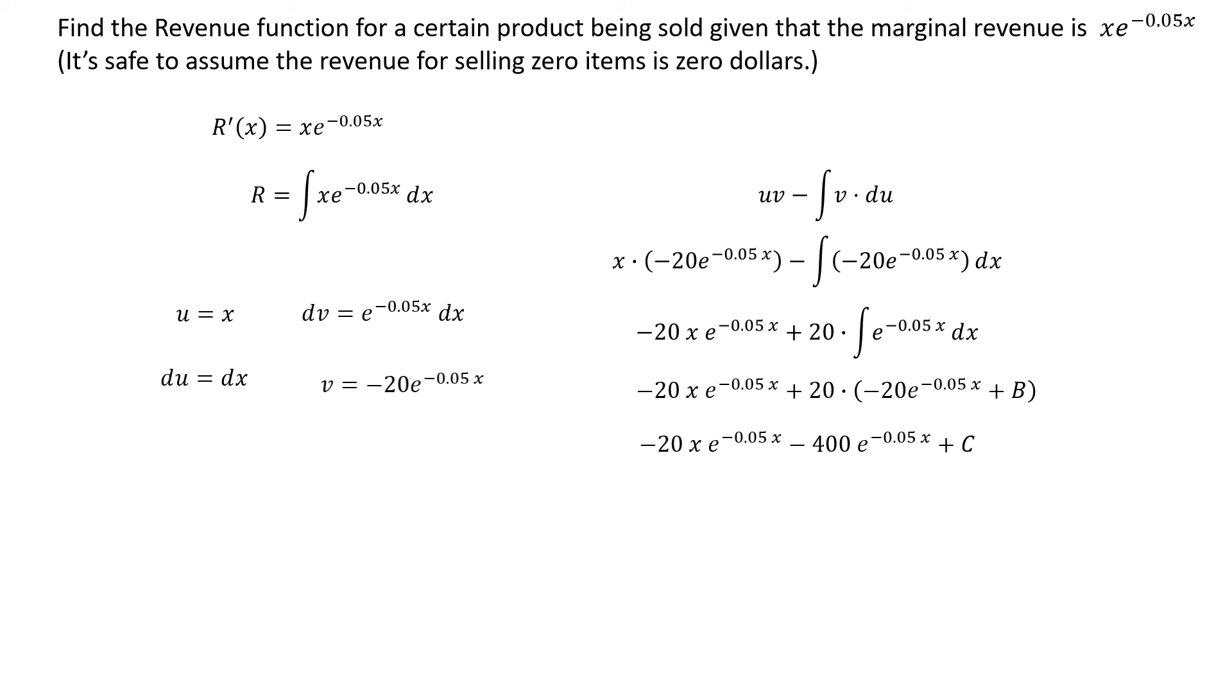So this is our revenue function, but we don't know what c is yet. Quite often when we do integrals, we just leave plus c in the answer. But this is a revenue function for a real product that's supposed to be able to make predictions about what our revenue will be based on sales. So we can't very well have a plus c in the answer. If you look at the top of the screen, you'll see where it says it's safe to assume that the revenue for selling zero items is zero dollars.